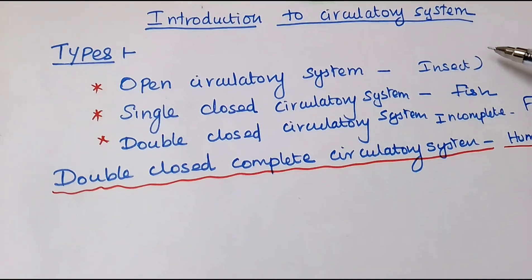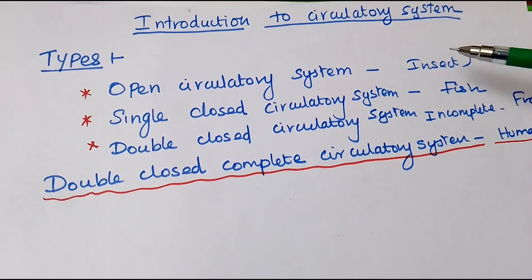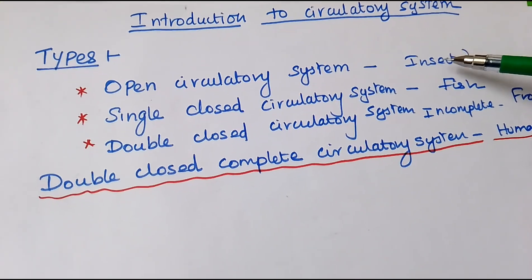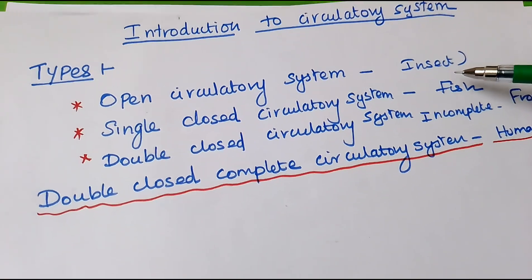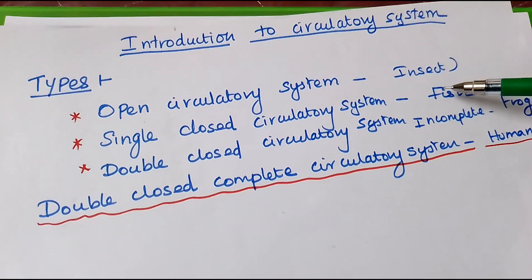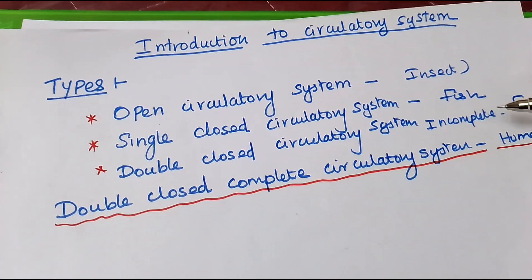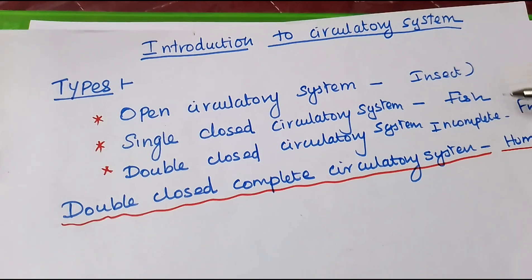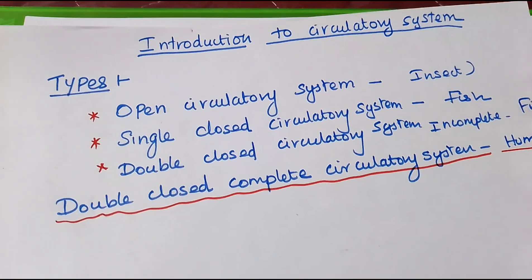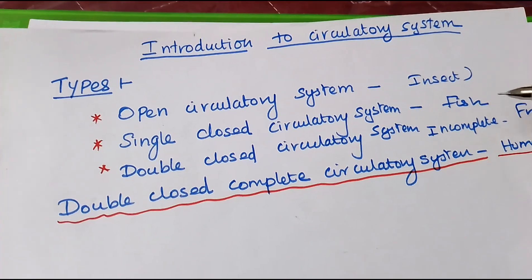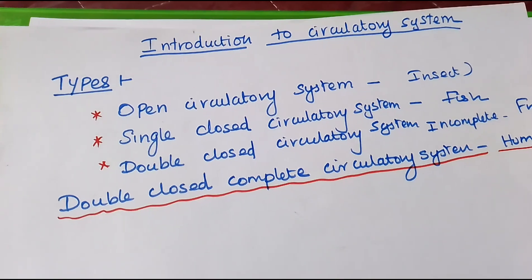Today we will see about the circulatory system. The circulatory system has three types: the open circulatory system, which you can find in insects; the single closed circulatory system, which you can find in fish; the double closed circulatory system, which you can find in frogs, but this is really incomplete; and the double closed complete circulatory system, which you can find in human beings.